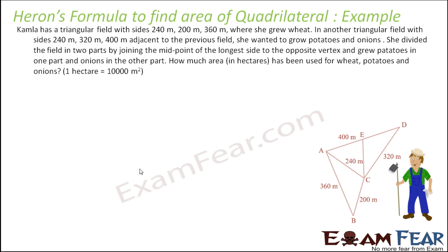Let's take the example of Kamala. She has a triangular field with sides 240, 200, and 360 meters. This is a triangular plot, as you can see. In this field, she grew wheat.